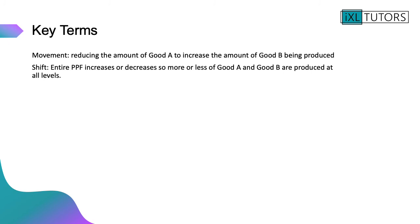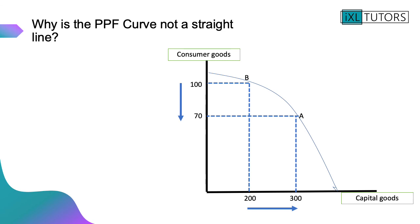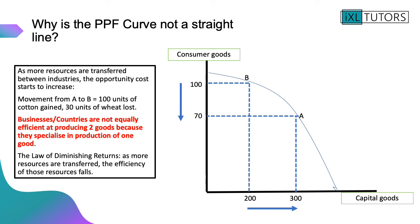One of the really important questions to answer is: why is the PPF curve not a straight line? The PPF is curved, not straight. When we transfer more resources between industries — for example from consumer goods to capital goods — the opportunity cost of producing capital goods starts to increase. Moving from point A to point B, we gain 100 units of capital goods but lose 30 units of consumer goods. Businesses and countries are not equally efficient at producing both goods because they specialize. This introduces the law of diminishing returns, which states that as more resources are transferred, the efficiency of those resources falls — which is why the PPF curve is not straight.